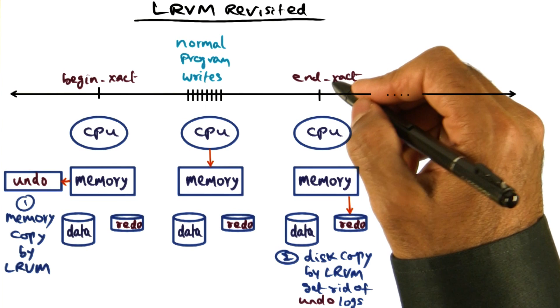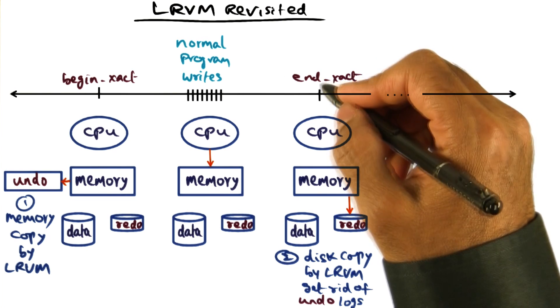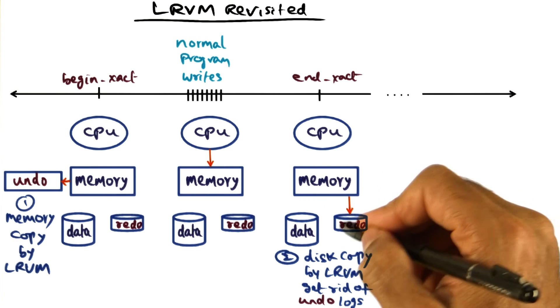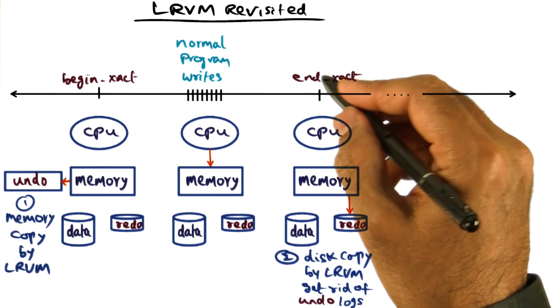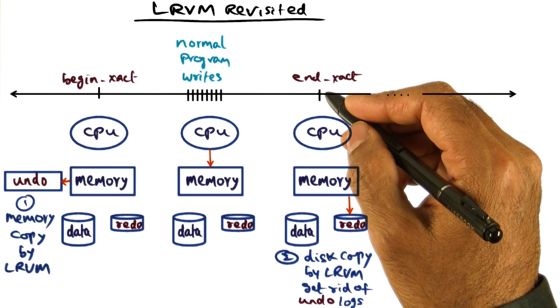Then the application reaches the end transaction, makes the end transaction call to LRVM. At that point, LRVM is going to write a redo record onto the disk when the transaction commits because end transaction is synonymous with committing so far as LRVM is concerned.